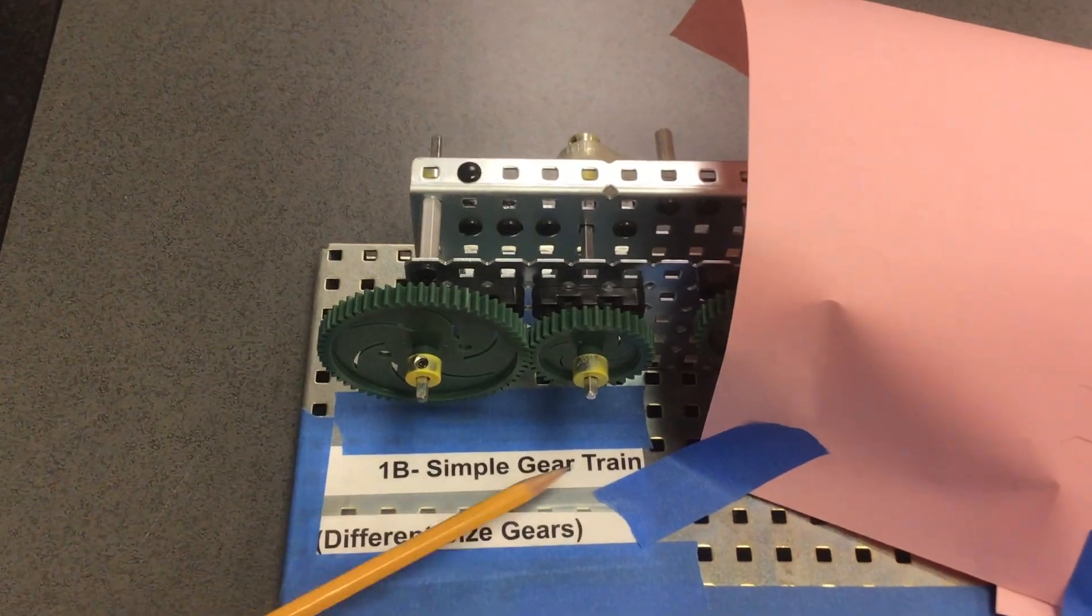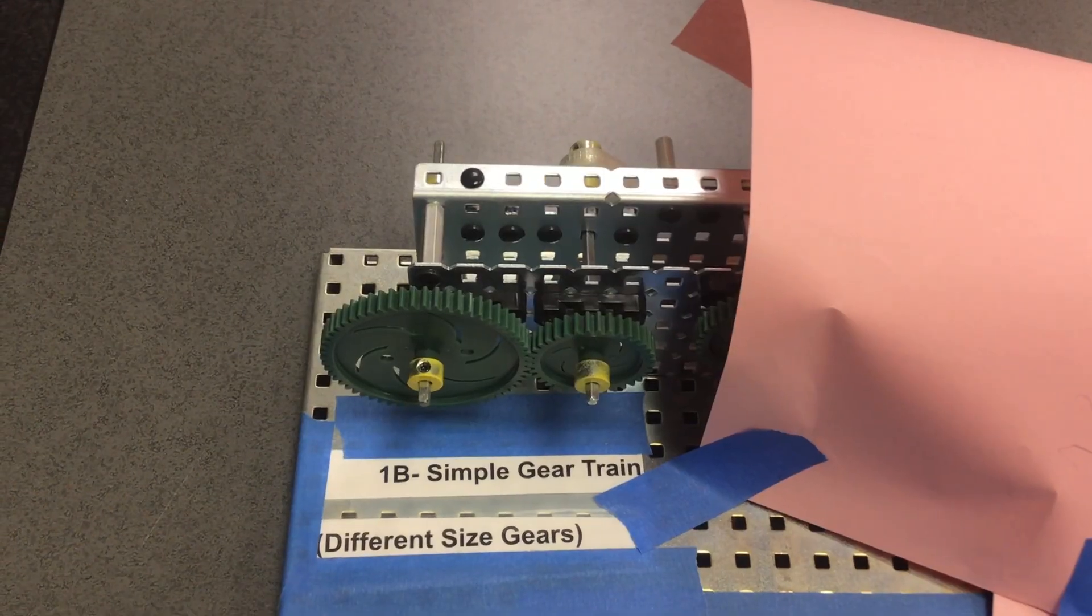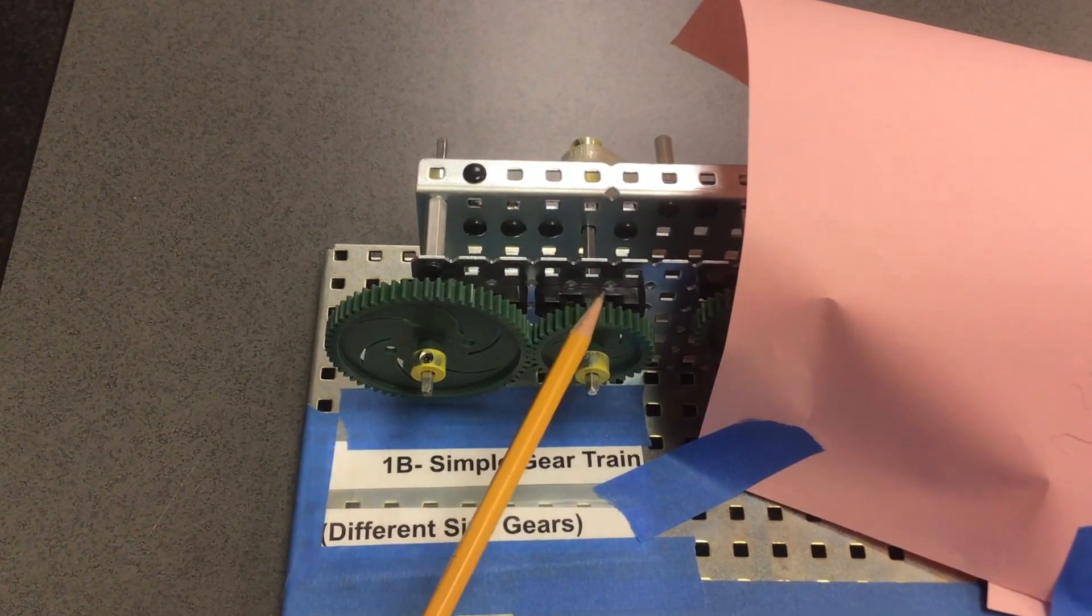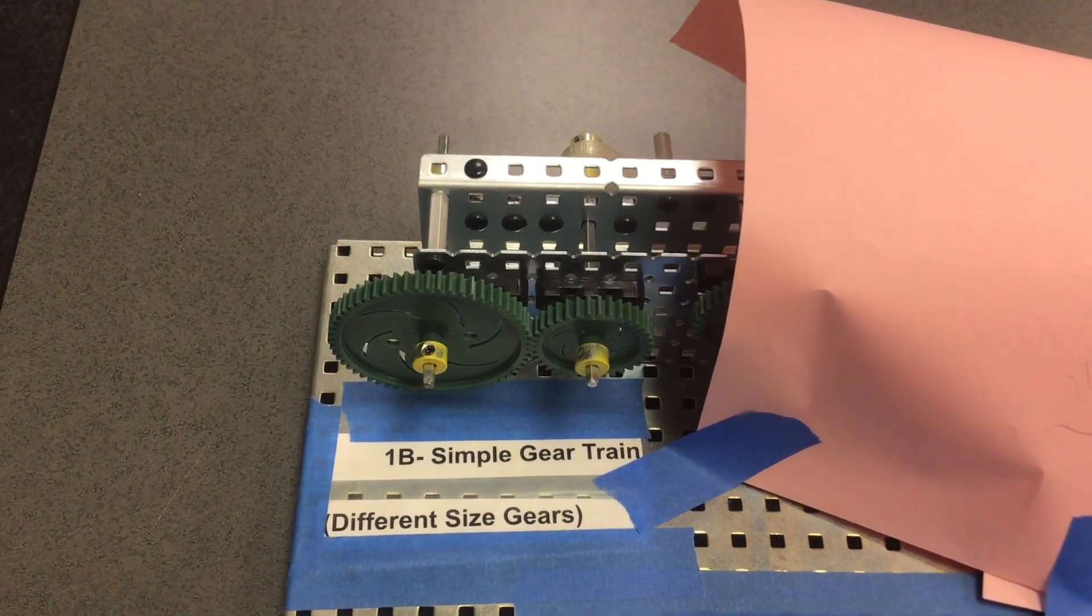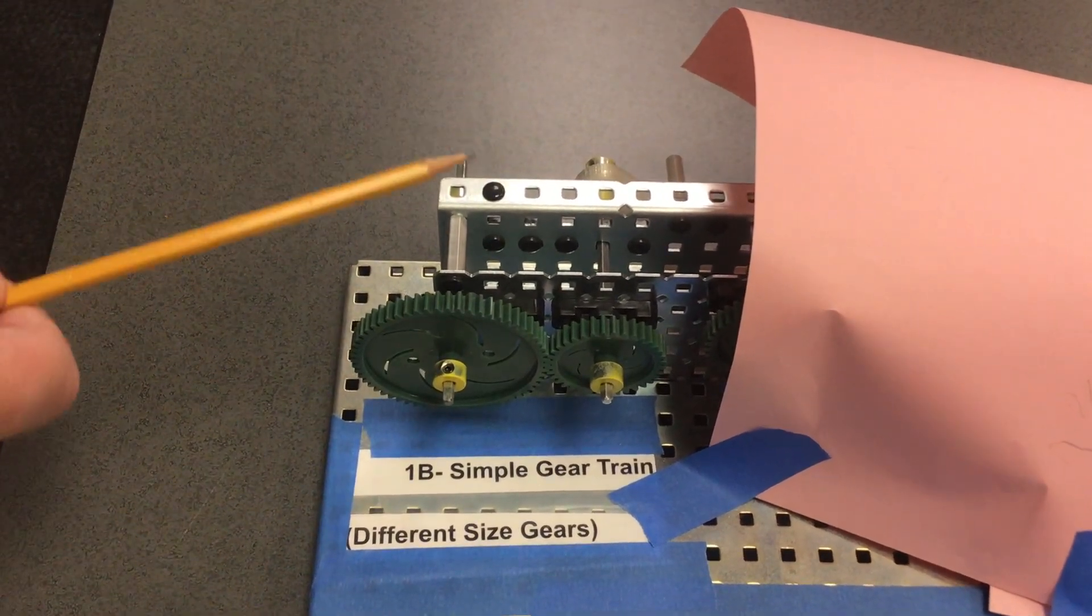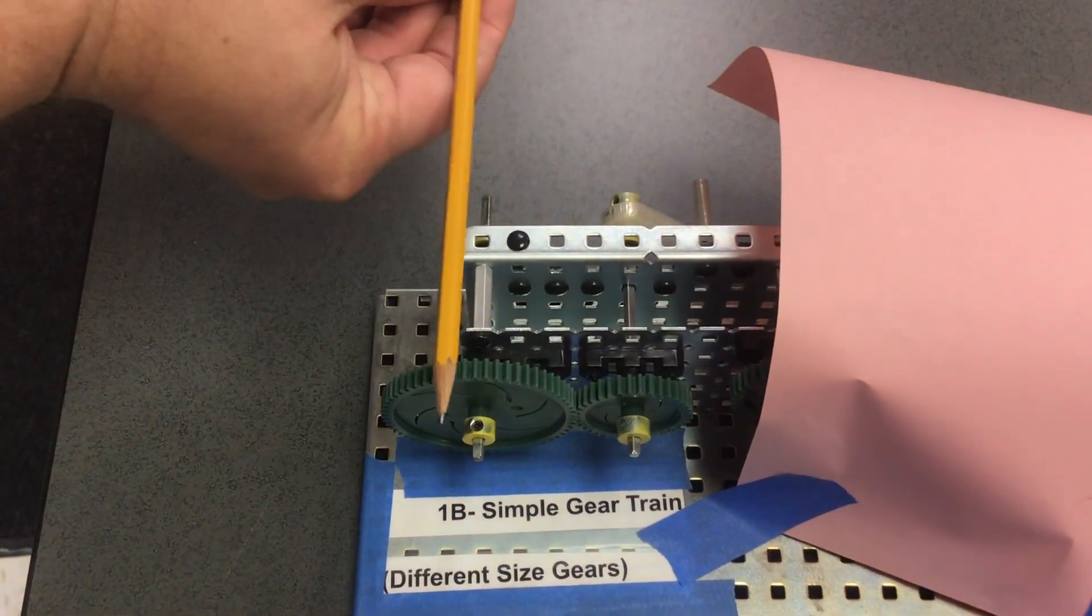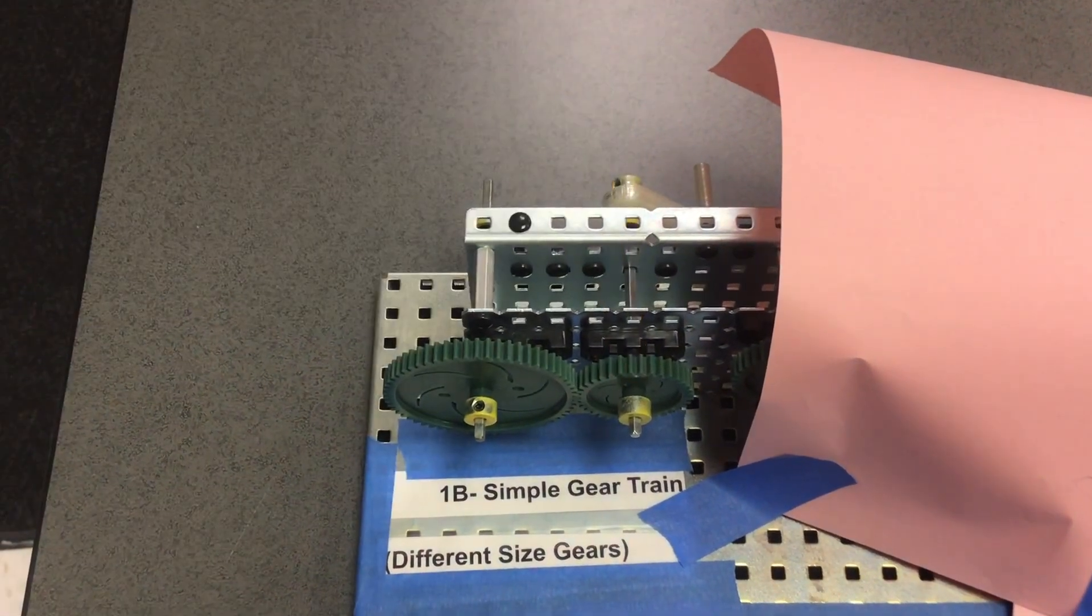This is Simple Gear Train B, two gears of different sizes, a larger gear and a smaller gear. They are attached to the test bed with two axles that are both parallel to each other.